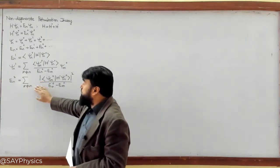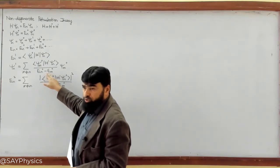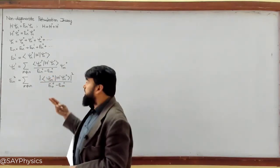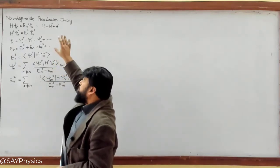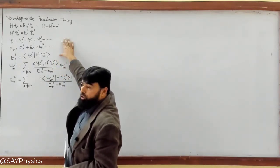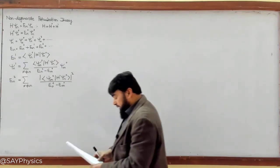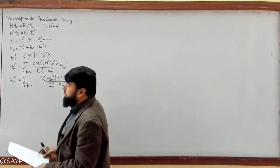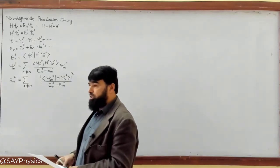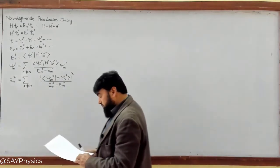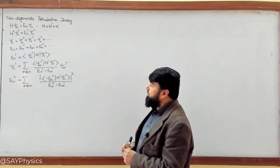These equations will not work for degenerate perturbation theory. If two different levels have the same energy, the denominator becomes zero and the expressions become undefined. These formulas work only for non-degenerate perturbation theory where every state has its own specific energy. Later we will study degenerate perturbation theory, considering situations with two or more levels sharing the same energy. This is the summary of what we covered last time.